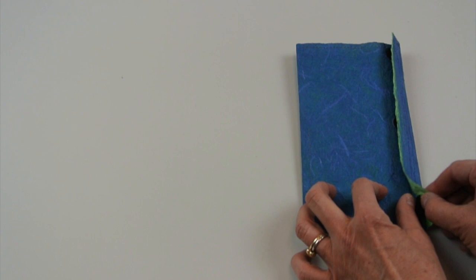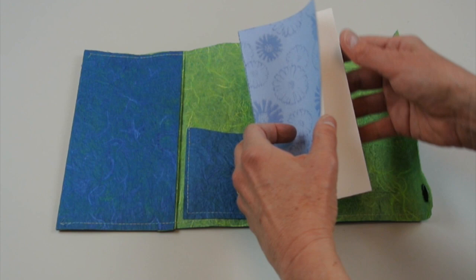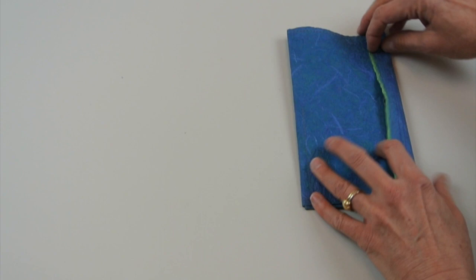Create this pocketbook or wallet from one sheet of paper with a series of accordion and roll folds as you explore sewing on this cloth-like paper, either by hand or with your sewing machine, and attach a velcro closure.